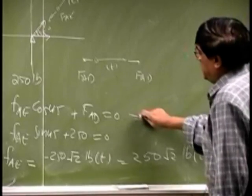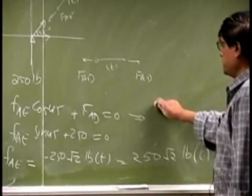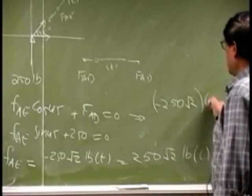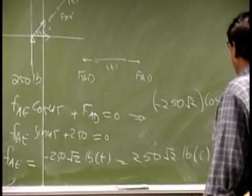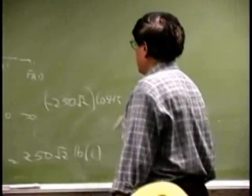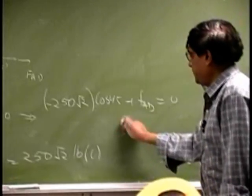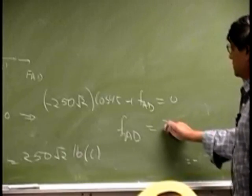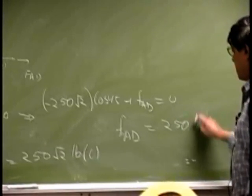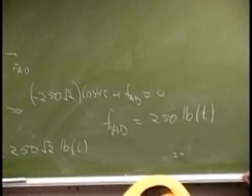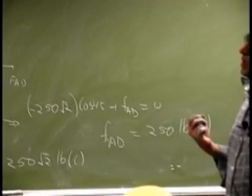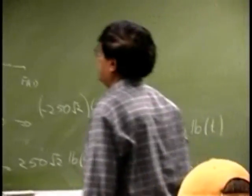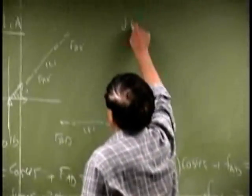Then you come here, you make substitution which means you go negative 250 square root 2, then you have cosine 45 plus FAD and that goes to 0. So, from here you are going to get FAD, this will get cancelled, you are going to have 250 pounds and that will be in tension. So, that is two forces, then you have a choice, you could pick joint E or you could pick joint D. So, the next thing we pick will be, let us say joint D.